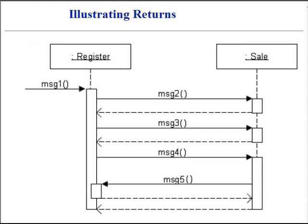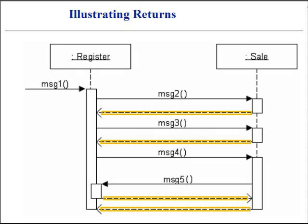A sequence diagram may optionally show the return from a message. The return appears as a dashed, open arrow line shown at the end of the activation box. Many practitioners exclude them.